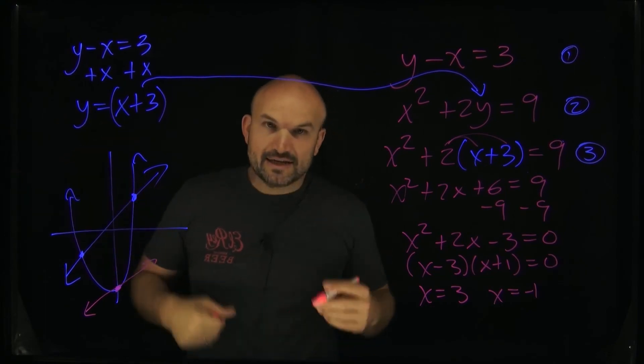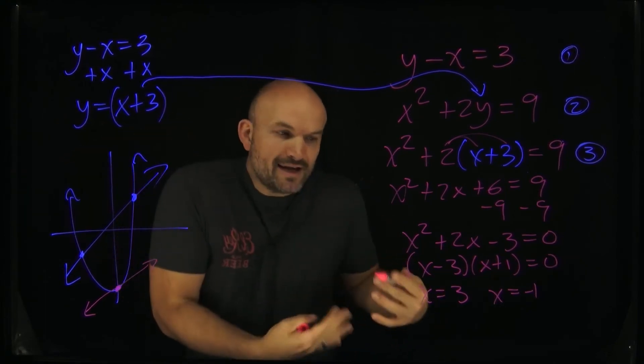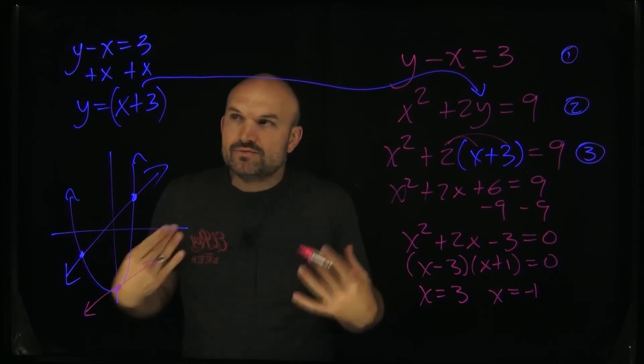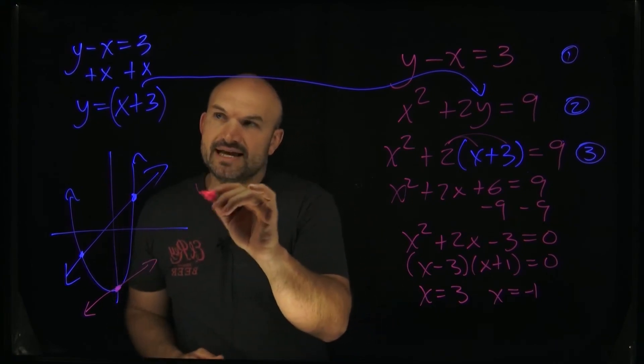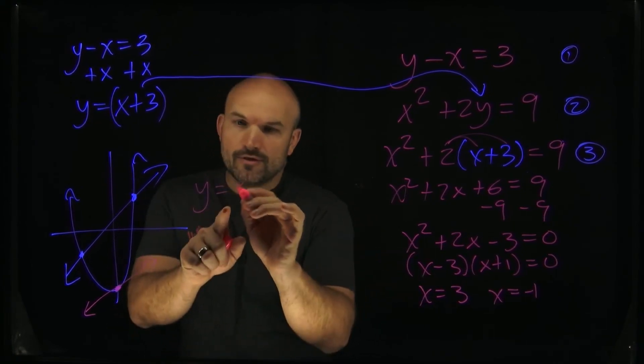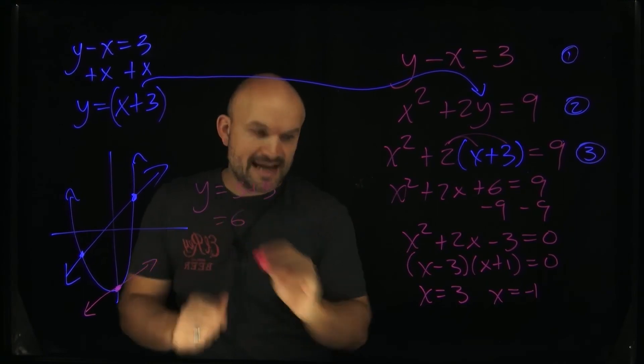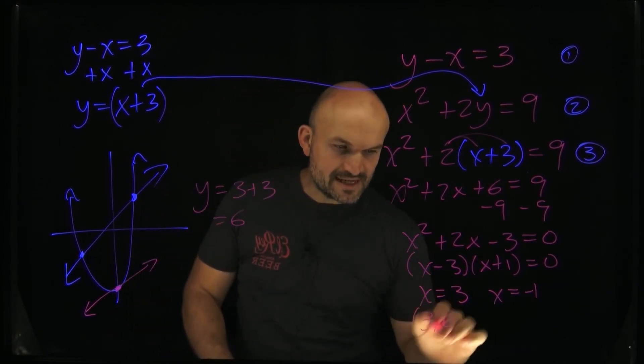So if I want to go ahead and take a look at my solution points. If I want to find, well, what is the y coordinate, right? x is equal to 3, then what is y? So all you're going to do is just take a y is equal to 3 plus 3, which equals a 6. So now I have a coordinate point 3 comma 6.